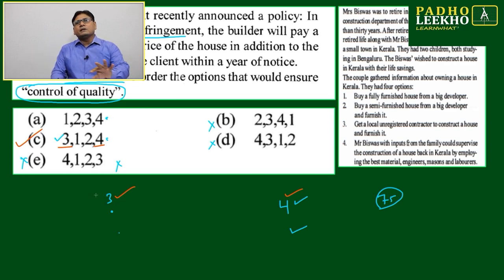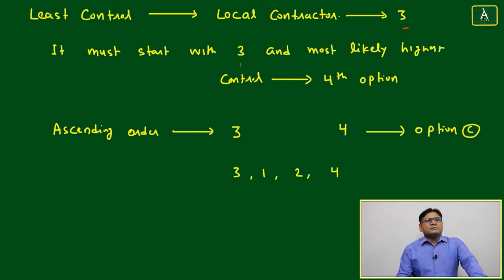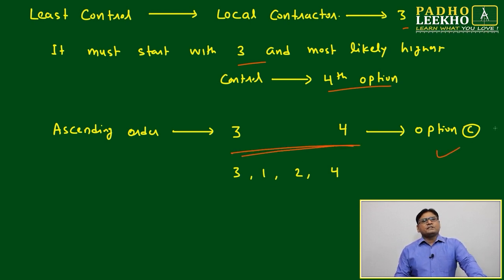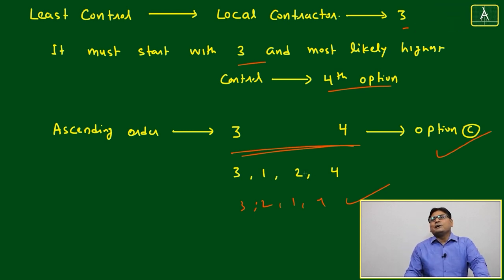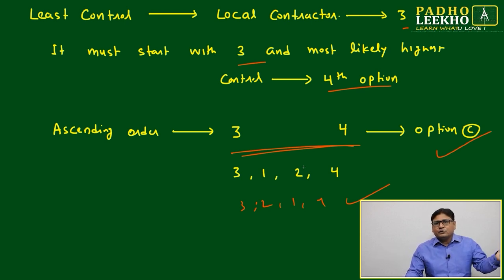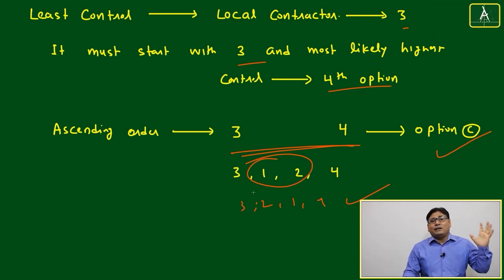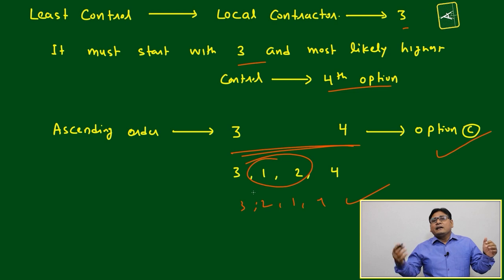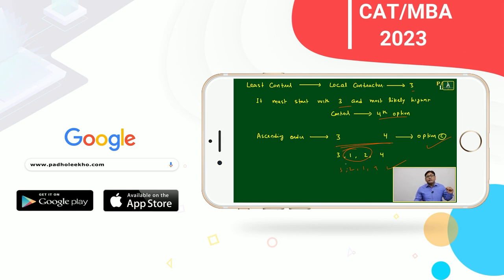Between options 1 and 2, whether they keep 1 then 2 or 2 then 1, we are not bothered about that — option C will be correct. Least control starts with 3 and highest control is 4. Between 3 and 4, option C is confirmed. We won't bother about 1 and 2 because no quantitative figure is given — either you are taking semi-furnished or after furnishing, and depending on developer or purchaser point of view, we cannot decide much related to control of quality between options 1 and 2.